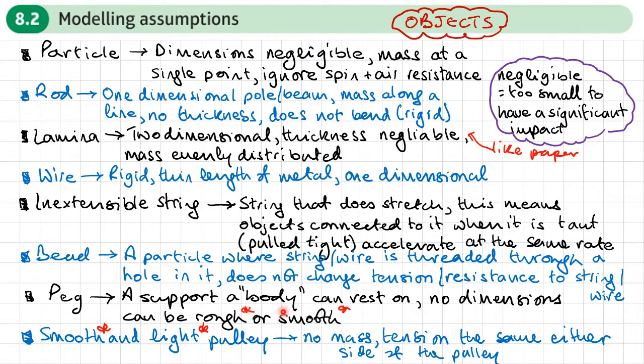Where I've put a little asterisk here, it means that there are further definitions. So we're now going to go through some other modeling definitions, which include these words: smooth, rough, and light.